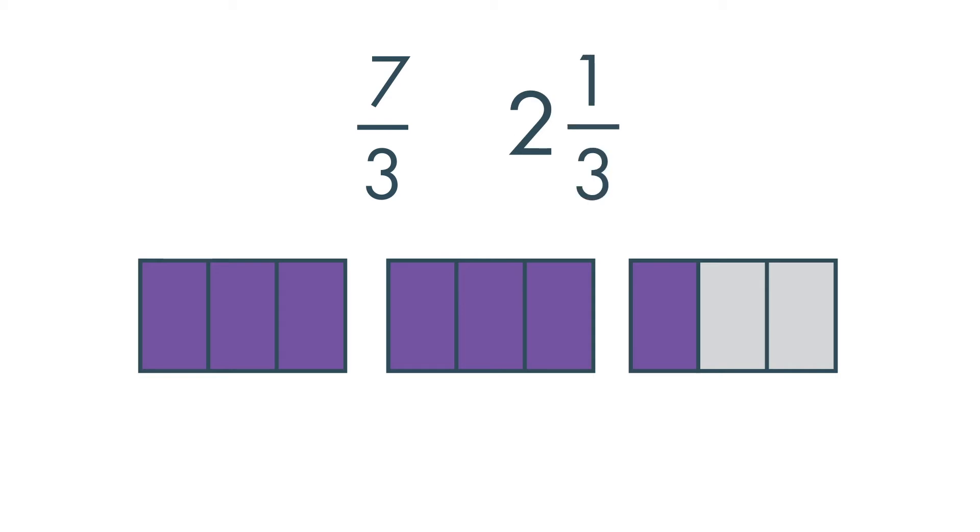A mixed number has a whole number and a fraction. The improper fraction 7 thirds is equivalent to the mixed number 2 and 1 third.